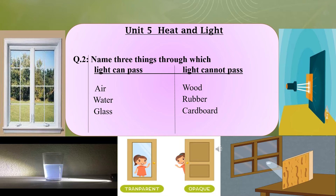Today we have to do Question Number 2: name three things through which light can pass and three things through which light cannot pass. You can make two columns — on the left-hand side write 'light can pass,' and on the right-hand side write 'light cannot pass.' In each column, write the names of three objects.